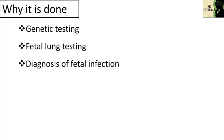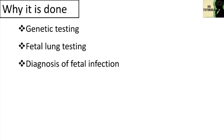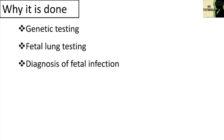Amniocentesis is also used for diagnosis of fetal infections. It can detect infections via decreased glucose level, a gram stain showing bacteria, or abnormal differential count of WBCs. Occasionally, it is used to evaluate a baby for infection or other illness, and to evaluate the severity of anemia in babies who have Rh sensitization — an uncommon condition in which a mother's immune system produces antibodies against a specific protein on the surface of the baby's blood cells.